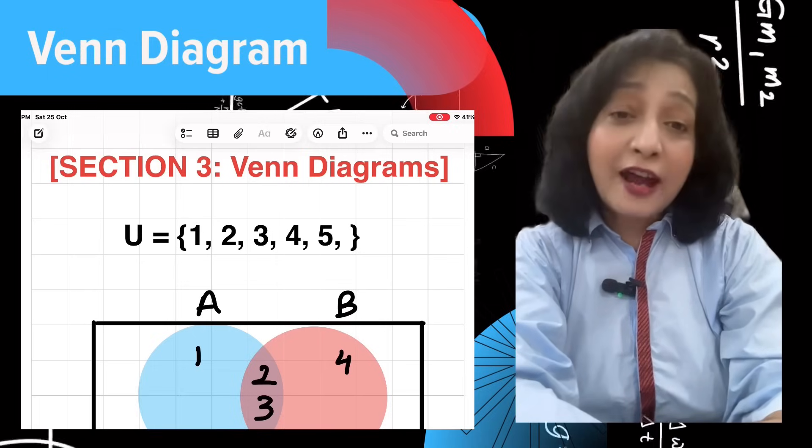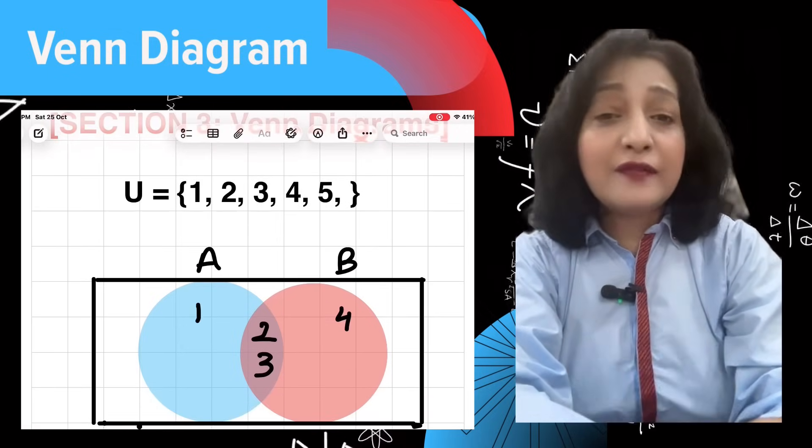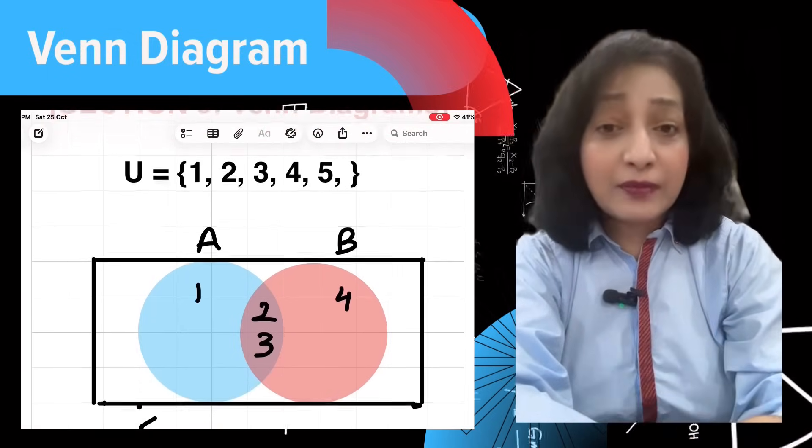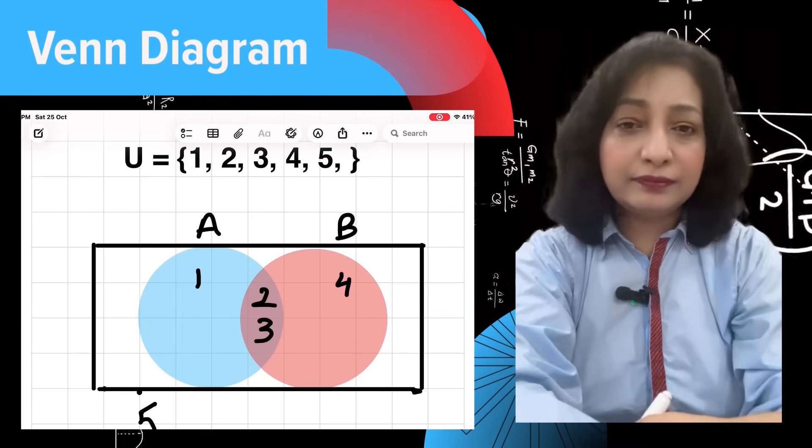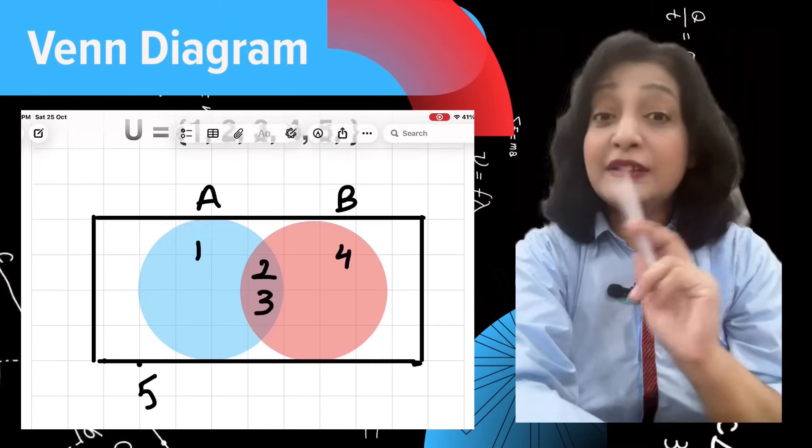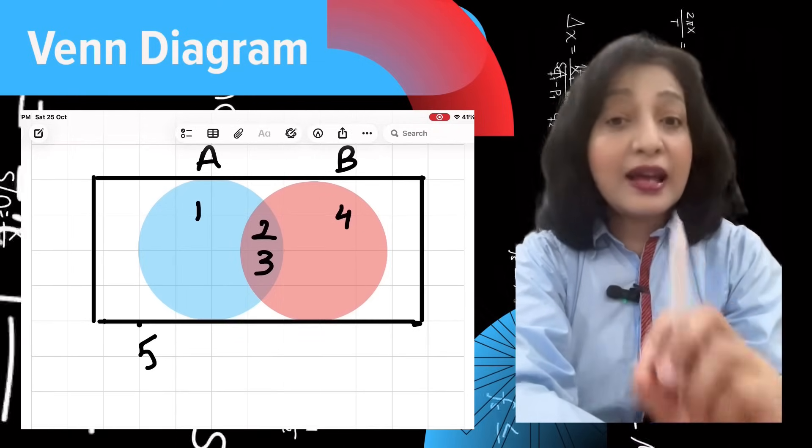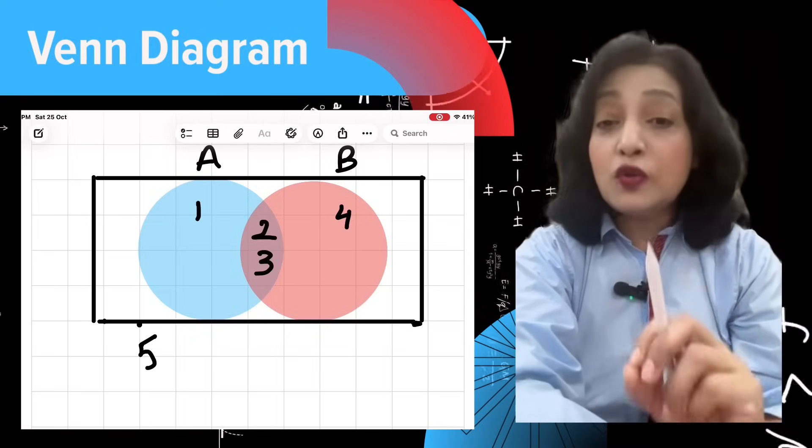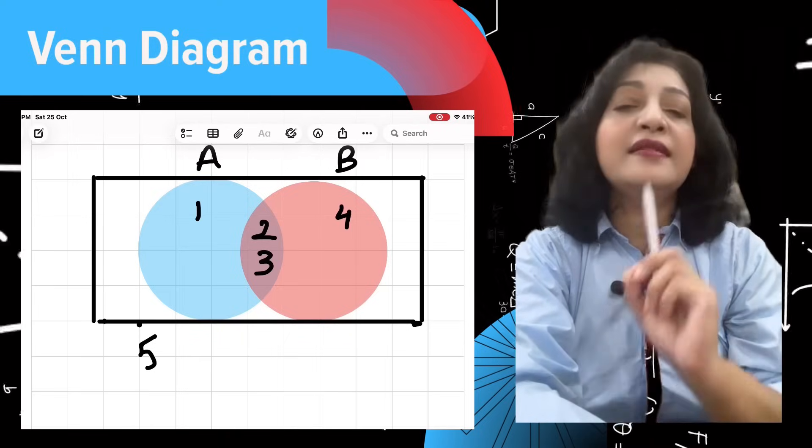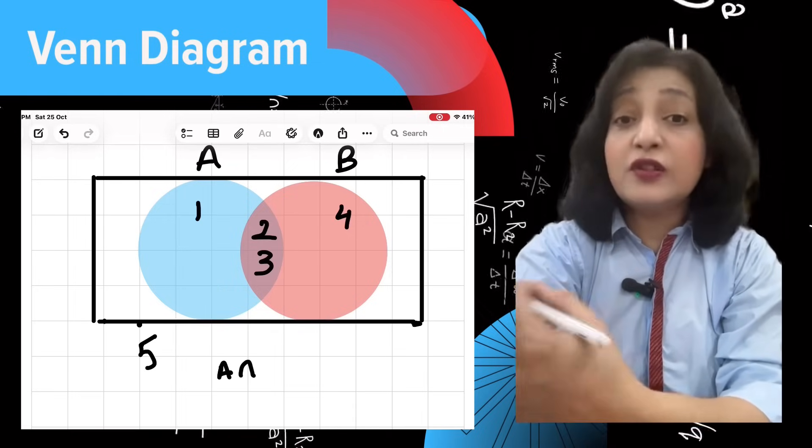Section three: Venn diagrams. Now this is where Venn diagrams come in. Look at the screen. I have drawn two overlapping circles in a rectangle. A Venn diagram uses circles to represent sets inside a rectangle that represents the universal set U.